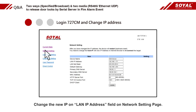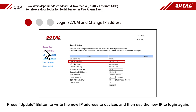Change the new IP on the LAN IP address field on the network setting page. Press the Update button to write the new IP address to the device, then use the new IP to login again.